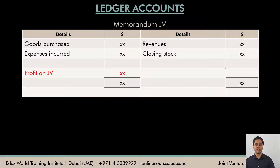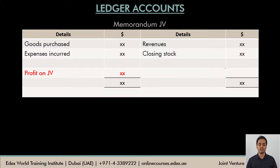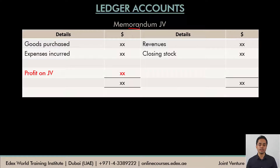This is the format of the memorandum JV. It is just a copy of the joint venture account — on the credit side we record incomes, gains, and closing stock; on the debit side we record all costs and expenses; and the difference is the profit on the JV. A memorandum account means there are no double entries anywhere for the entries shown in this account. It is just a statement prepared to calculate the profit or loss — do not get confused thinking there will be any second effect for these transactions.